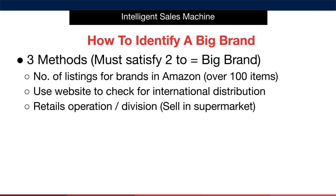Method one is to check the number of listings for the brand on Amazon — if there are over 100 items, then we'd consider that satisfied. Next, check the brand's website and ascertain if they have international distribution. If the brand sells prominently in multiple countries, then we'd consider this satisfied. If they don't have a website, I'd say they're not a big brand — what big brand doesn't have a website? Finally, if the brand has a retail operation or division and therefore sells in a supermarket or hypermarket, then we'd consider this satisfied.